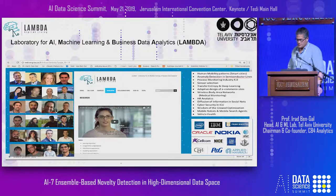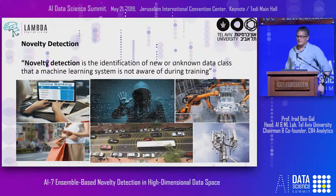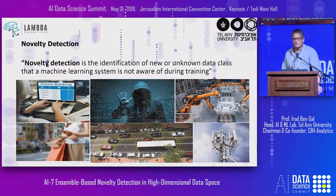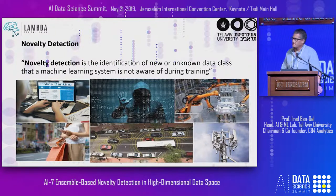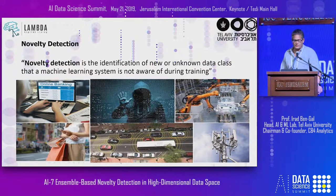Novelty detection is the identification of new data classes. Unlike anomaly detection, where we're looking for something that can be a result of noise or an abnormal point in space, here we are talking about a new class of data that was not presented during the learning stage of the models. And of course it happens all around us.